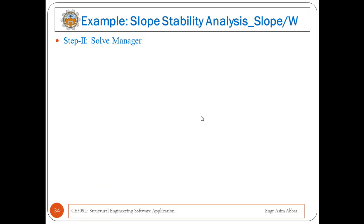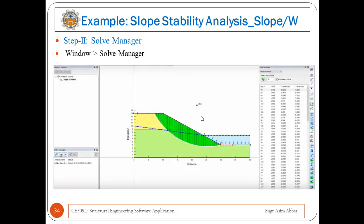Once the model is completed, it is ready for analysis. Go to the Solve Manager to start the solution. Once the solution is completed, it will give you the most critical slip path or surface with its factor of safety, along with many other slip surfaces having different factors of safety.